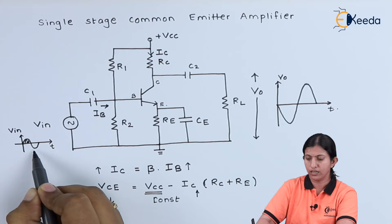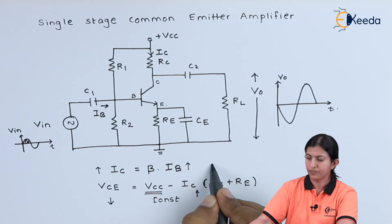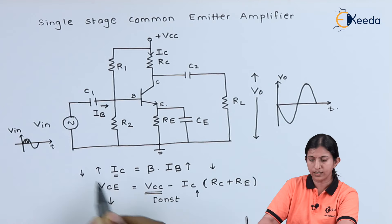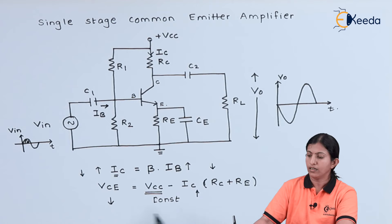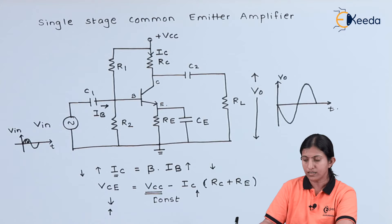During the negative half cycle of the input signal, the input current IB decreases. As IB decreases, the value of IC also decreases, and the effect of that decrease in IC results in an increase in voltage VCE.